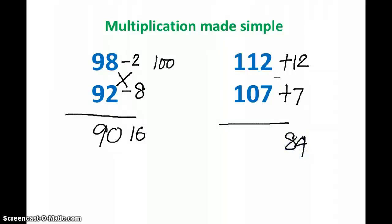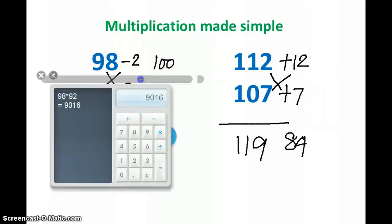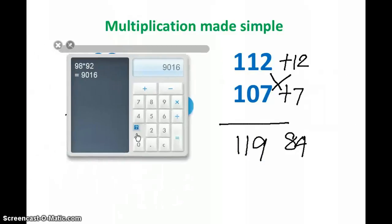And I need to do a cross addition, that is 112 plus 7 or 107 plus 12. Whatever I do, the answer is 119. So the answer is 11984. Let's check if it is correct or not. 112 into 107, that gives me 11984. That's exactly what we found out.